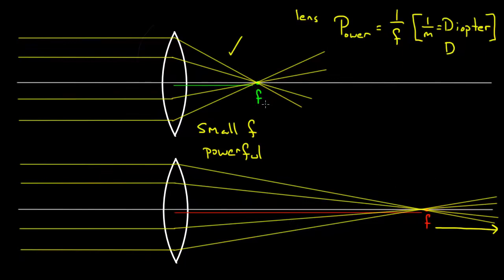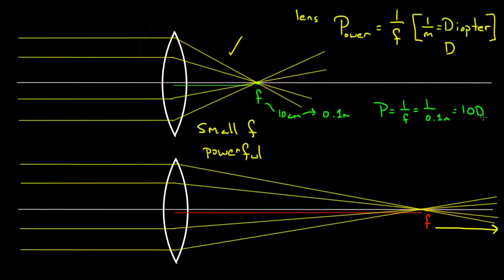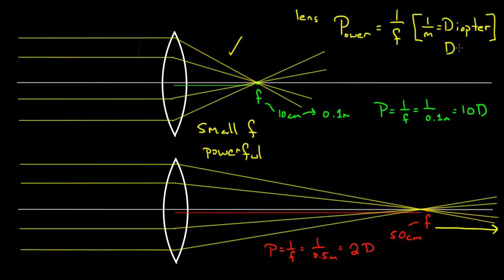For example, if the focal length of the first lens is 10 centimeters, I convert to meters: 0.1 meters. The power is one over 0.1 meters, giving a 10-diopter lens. For the second lens with a focal length of 50 centimeters, the power is one over 0.5 meters, giving 2 diopters. A diopter has units of one over meters, or meters to the negative one.